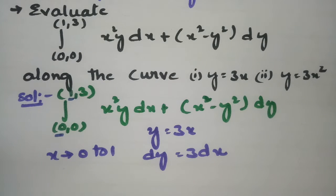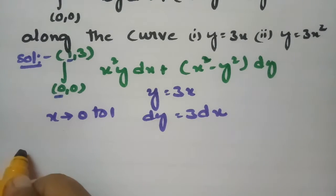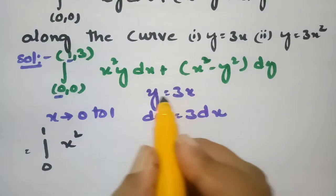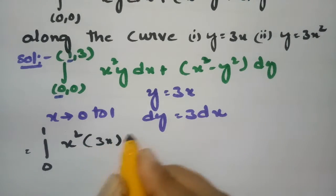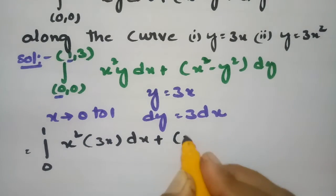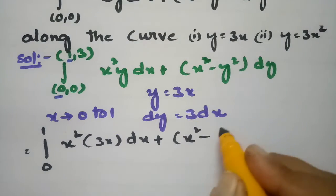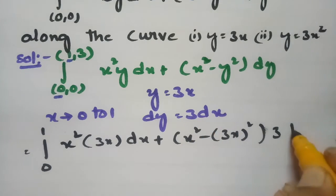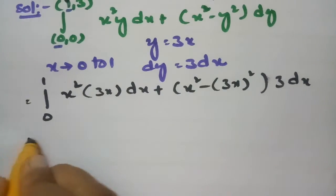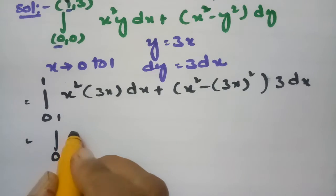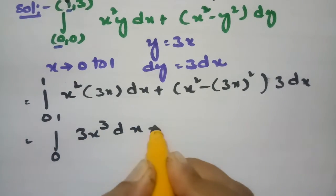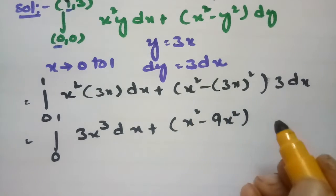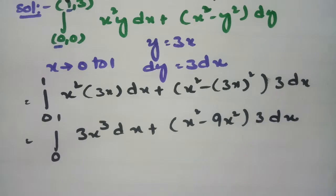Substituting, the integral from 0 to 1 becomes: 3x² times 3x dx plus (x² minus (3x)² ) times 3 dx. Expanding: 3x³ dx plus (x² minus 9x²) times 3 dx.